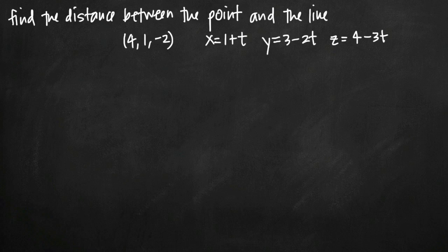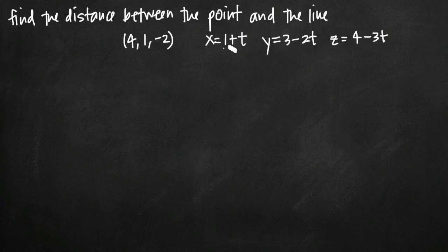Today we're going to be talking about how to find the distance between a point and a line. In this particular problem, we've been given a point and a line defined by parametric equations. The first thing we need to do is take the equation of the line, which is in parametric form, and define it in terms of vectors.